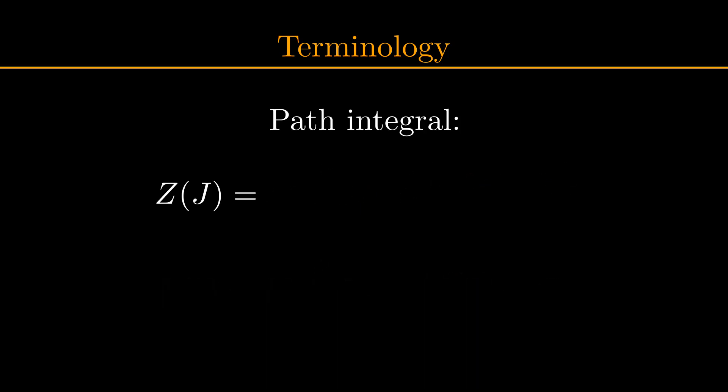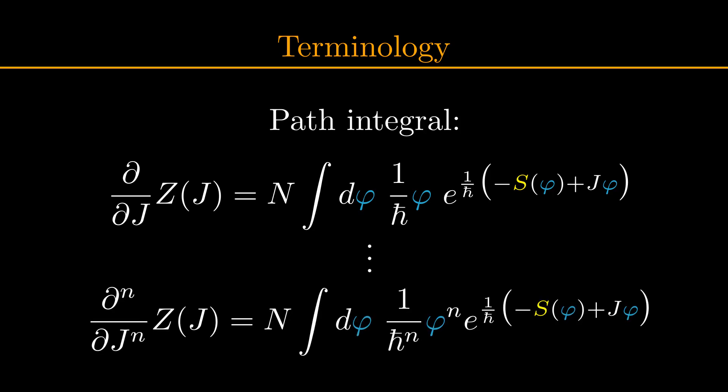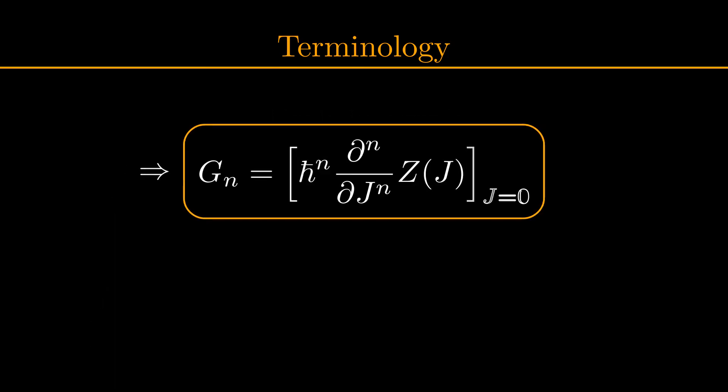Now observe how if I take the derivative of the path integral with respect to j, our integrand gains a factor phi over h bar, and we can repeat this process to add any number of phi's in the integrand we want. Therefore, we can obtain the nth Green's function by taking the nth derivative of the path integral with respect to j, multiply by h bar to the n, and then set j equals zero. Using all of the just mentioned terminology, we can say that the expectation value of our quantum field is equal to the first Green's function or h bar times the derivative with respect to j of our path integral, after we set j equals zero.